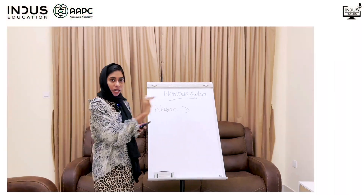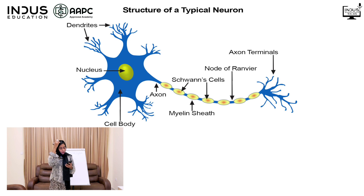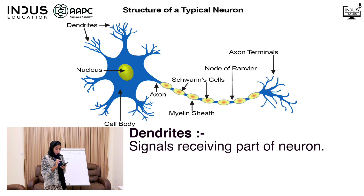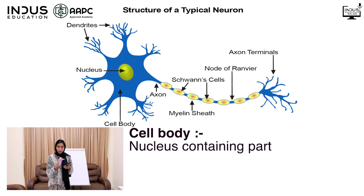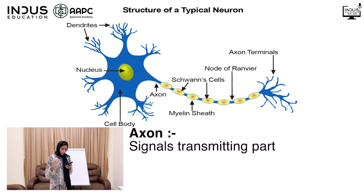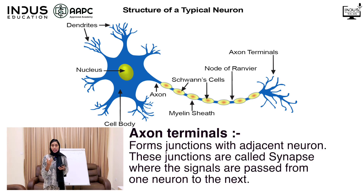Let's look at the structure of a Neuron. The first portion receives signals — that portion is called the Dendrite. The Dendrite connects to the Cell Body, which contains the Nucleus. There is also a pathway to carry signals called the Axon. The last end of the axon is called the Axon Terminal.